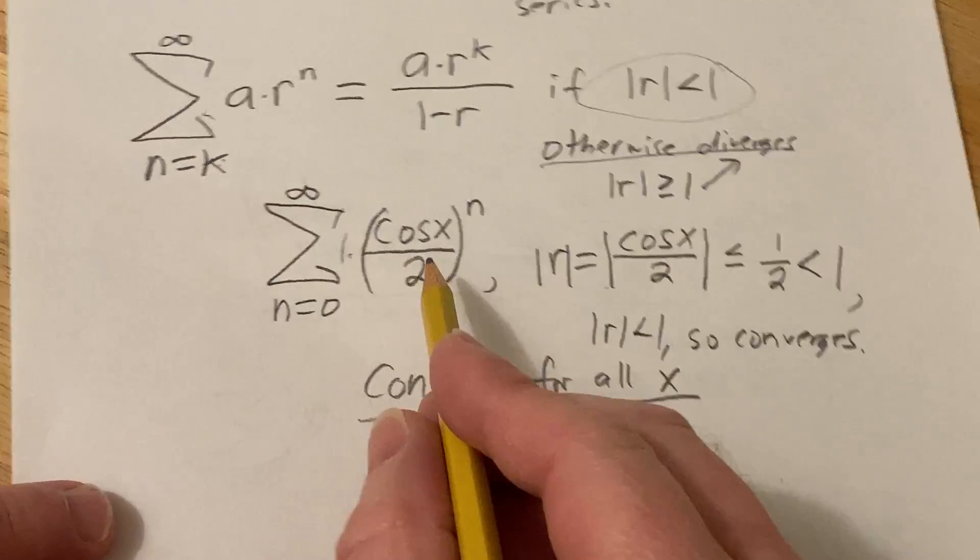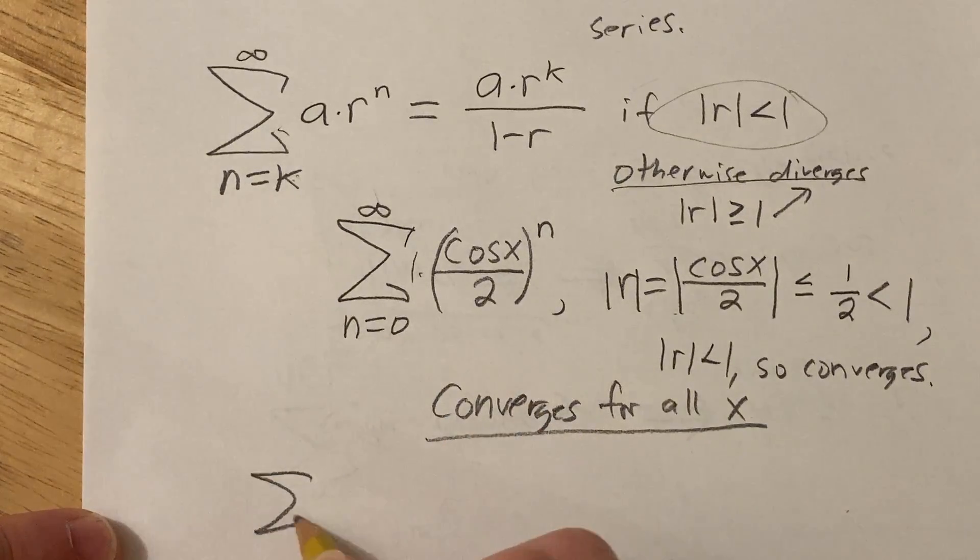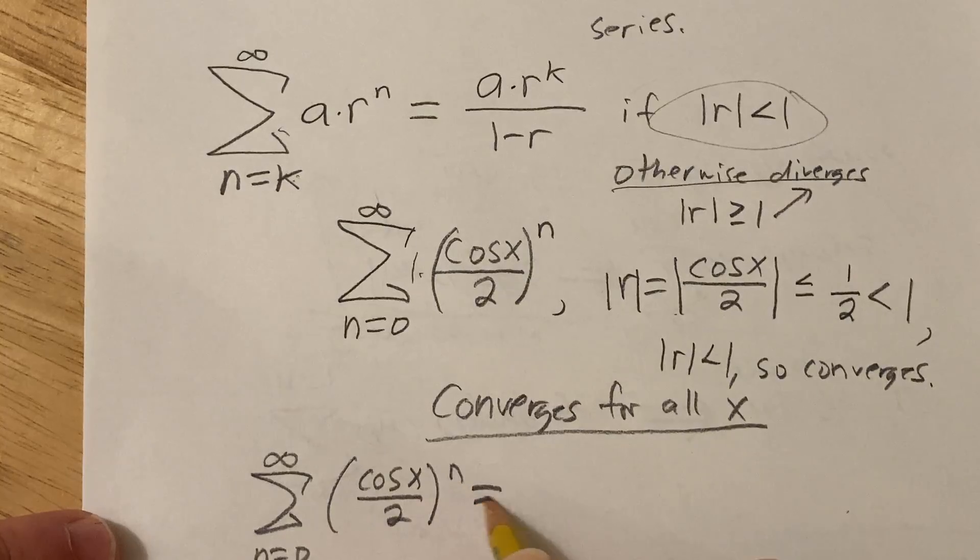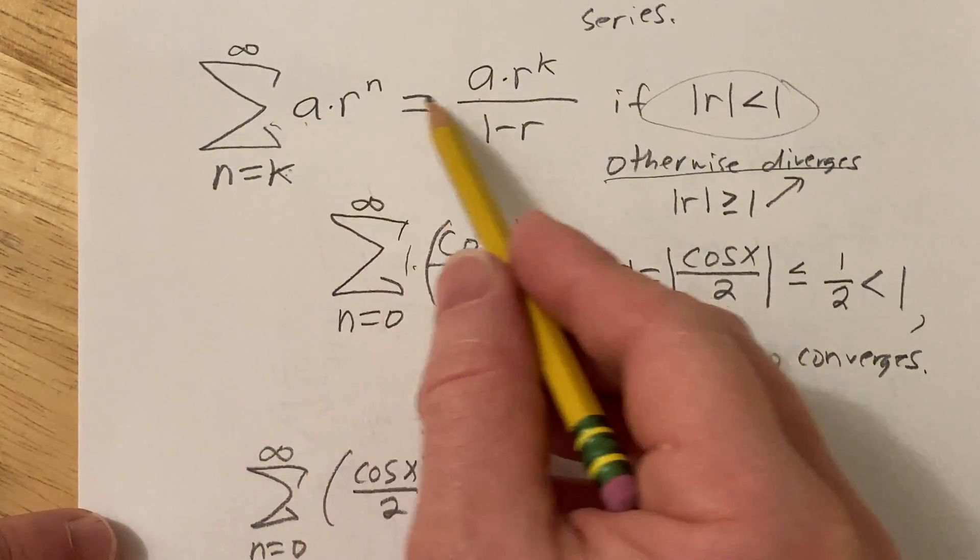So yeah, so now we can write down the answer, like what is the sum? So let's see. So this infinite sum, as n runs from 0 to infinity, of cosine x over 2 to the n, well, the formula I wrote down says it's just going to be a, which is 1, so it doesn't really matter.